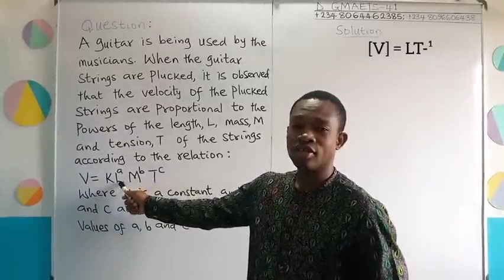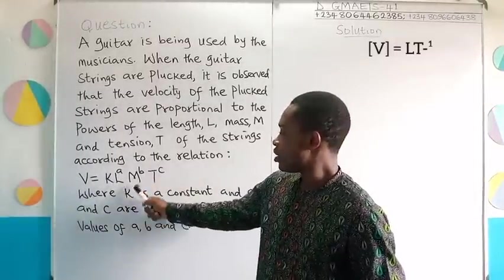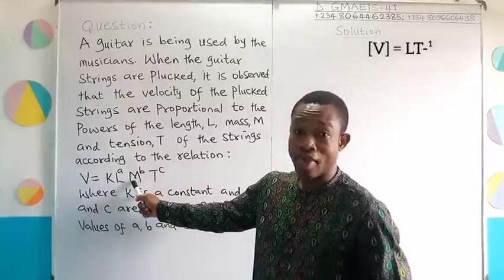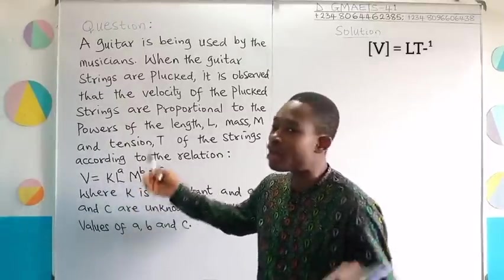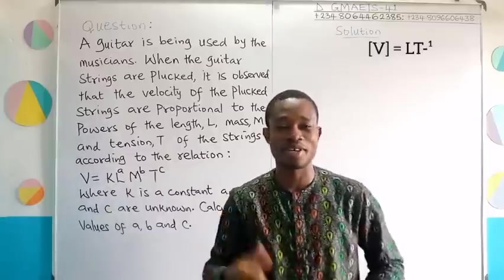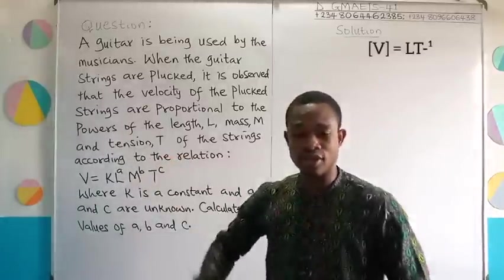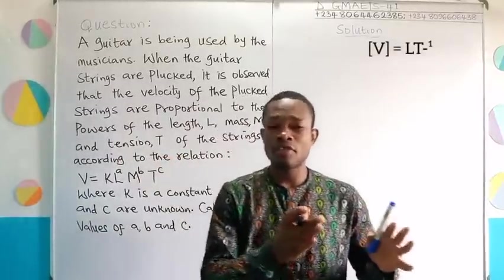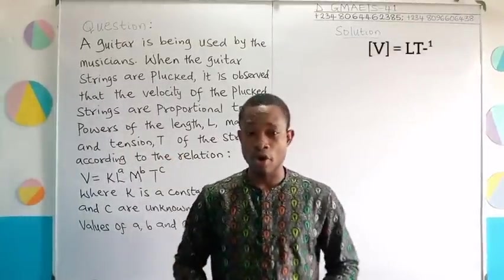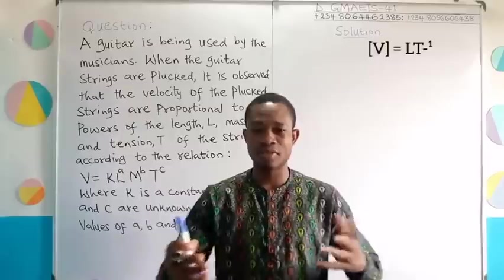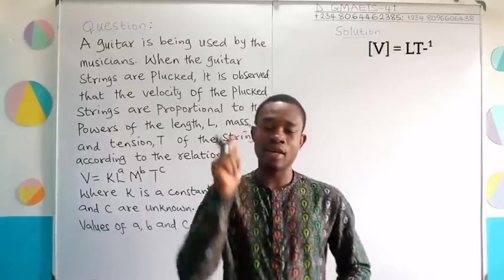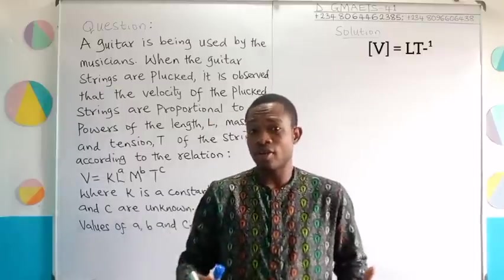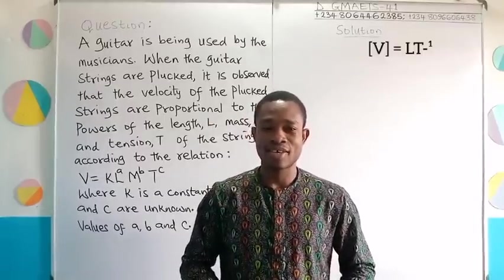And then, our L here is length. M is the dimension of mass. This L is the dimension of length. Then, this T, we could have said it's time, but it is not time here. T was defined to represent tension. And the dimension of tension is the same as the dimension of force, because force and tension, they are similar. Are you getting me right? Tension is the force in a spring or string, as the case might be.